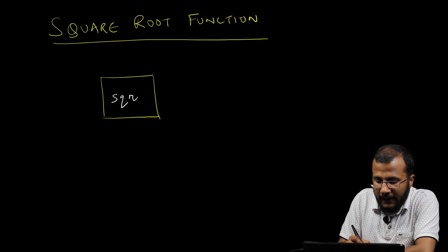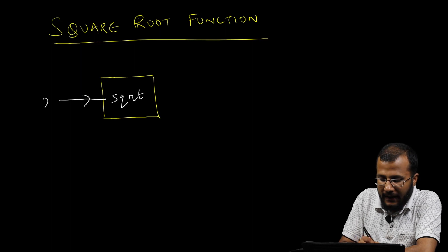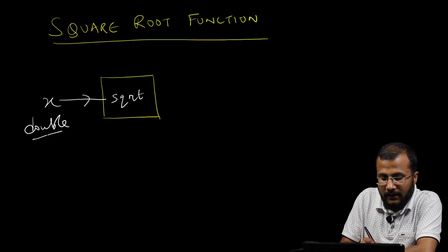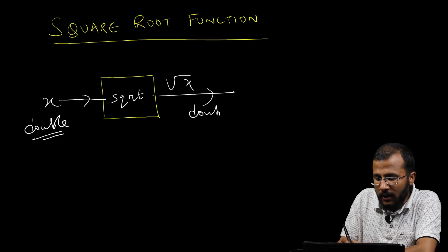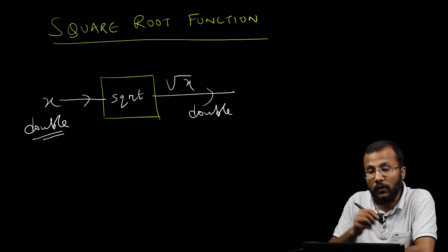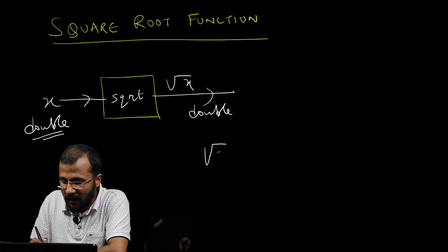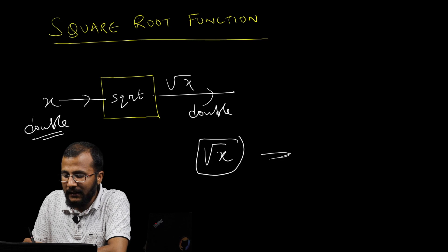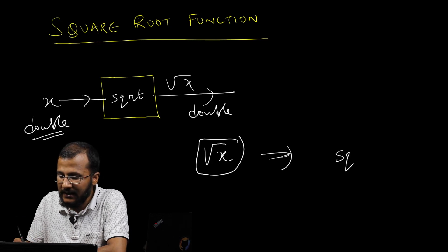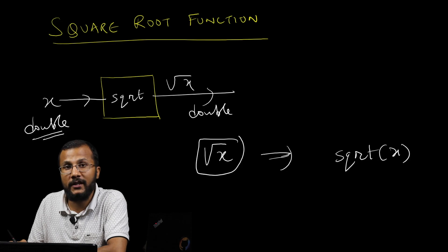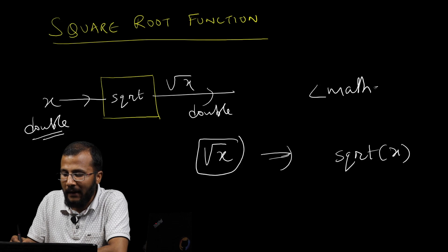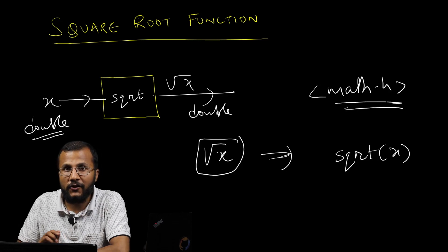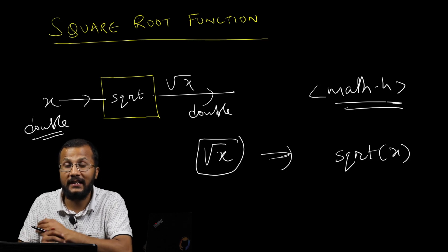Now let's talk about the square root function. The name of the function is sqrt. It takes one input x, which is double in nature, and produces the square root of x, which is also double. To find the square root of x in C programming you write sqrt(x), and it will produce the square root of x. Obviously, you have to include the header file math.h to use this function.